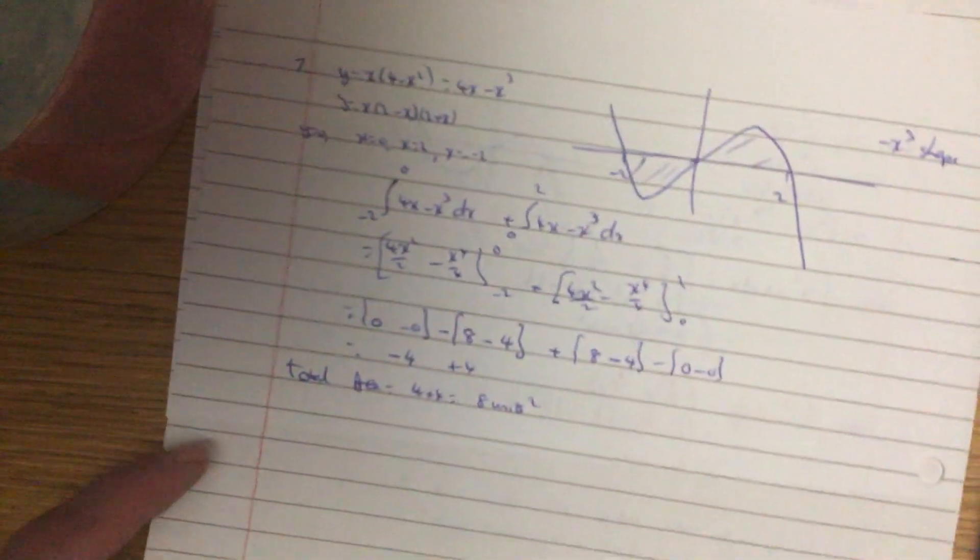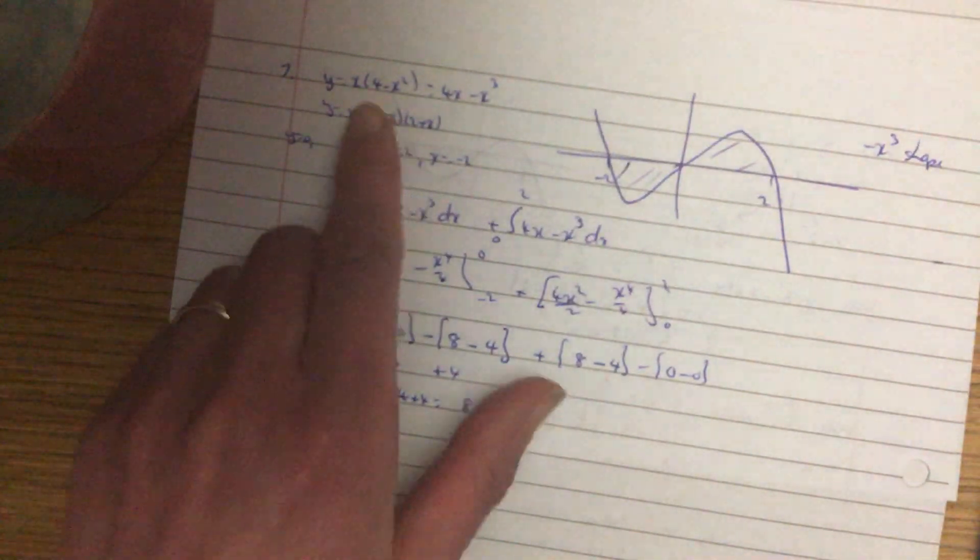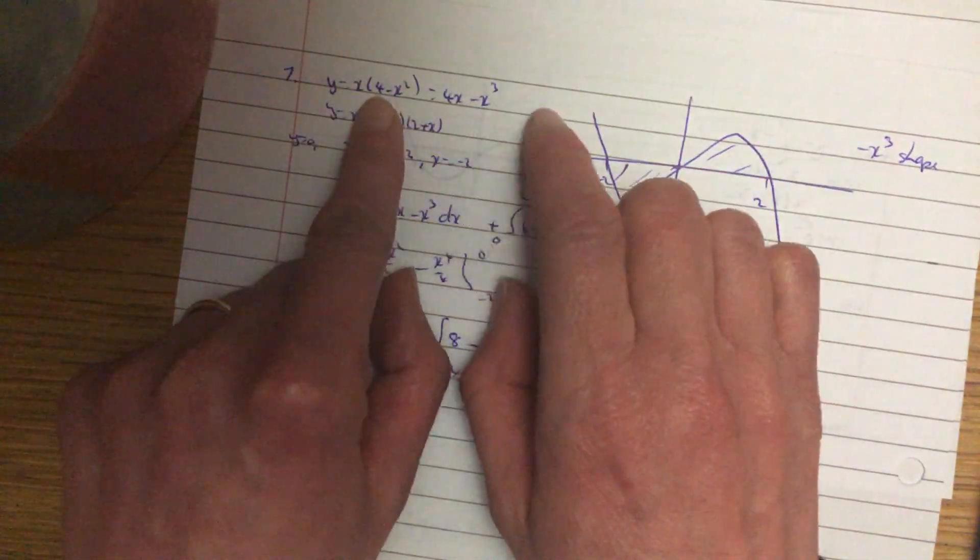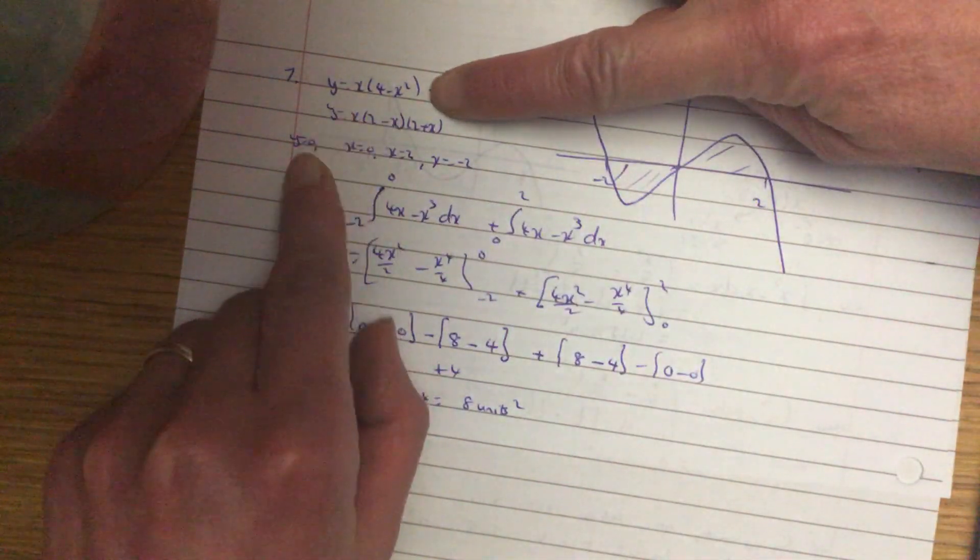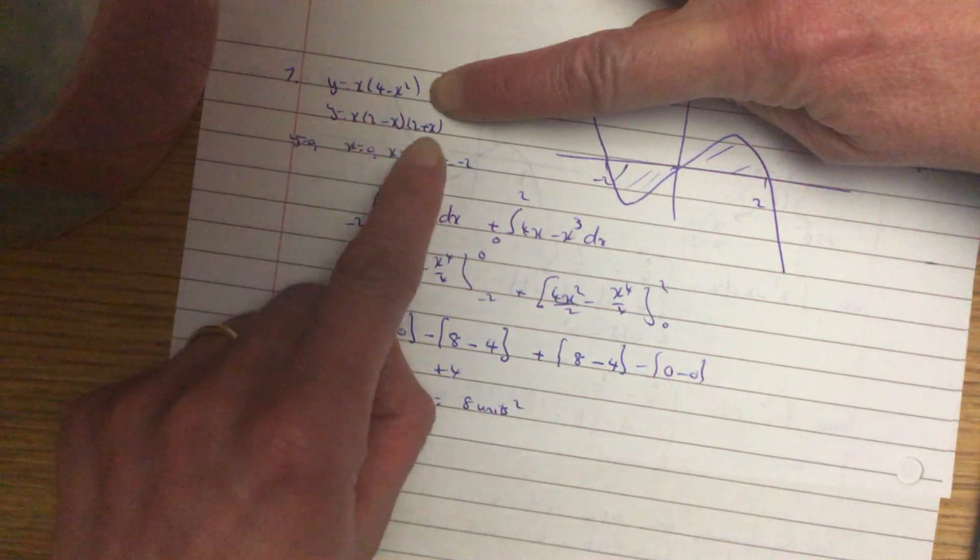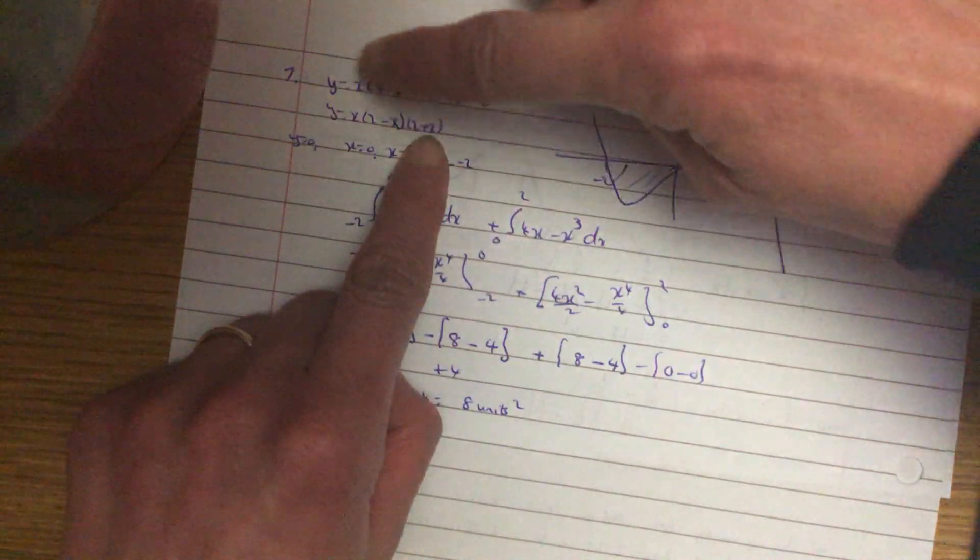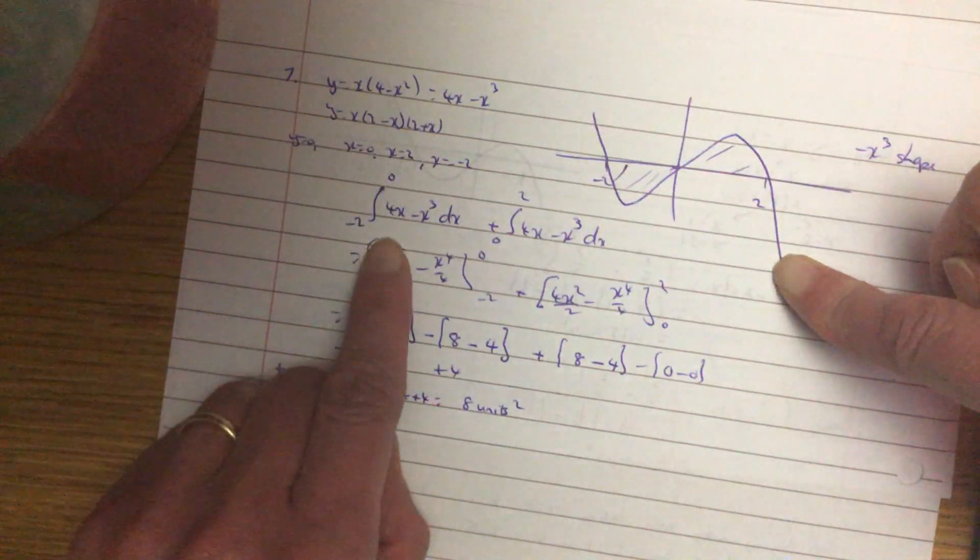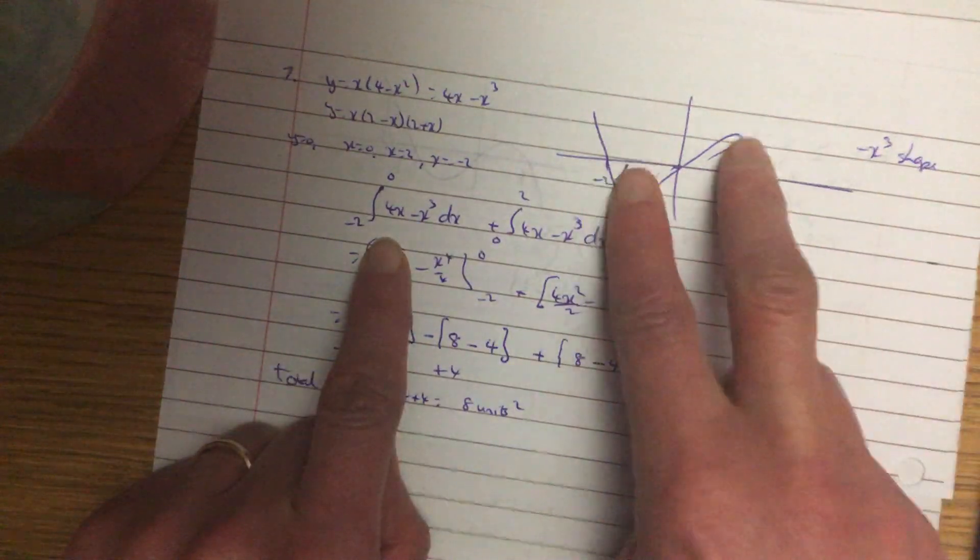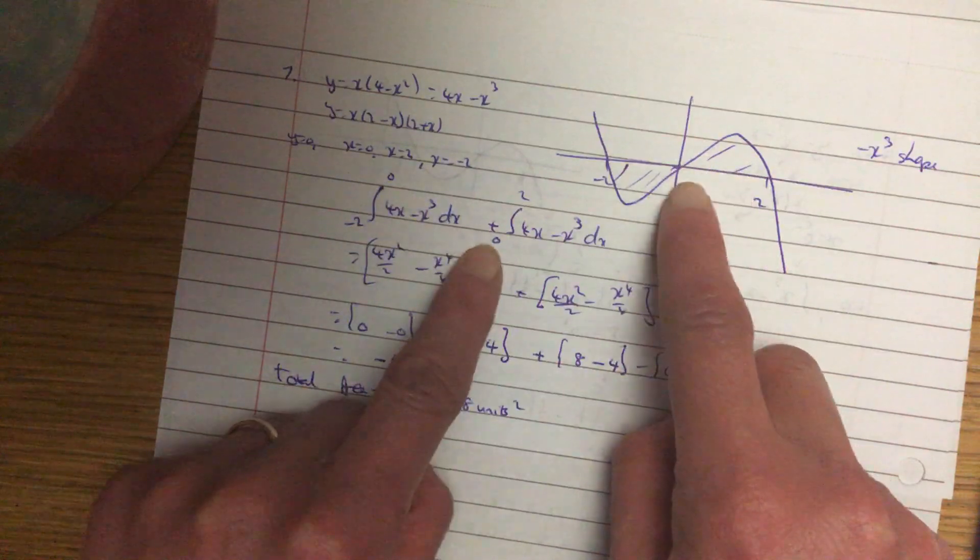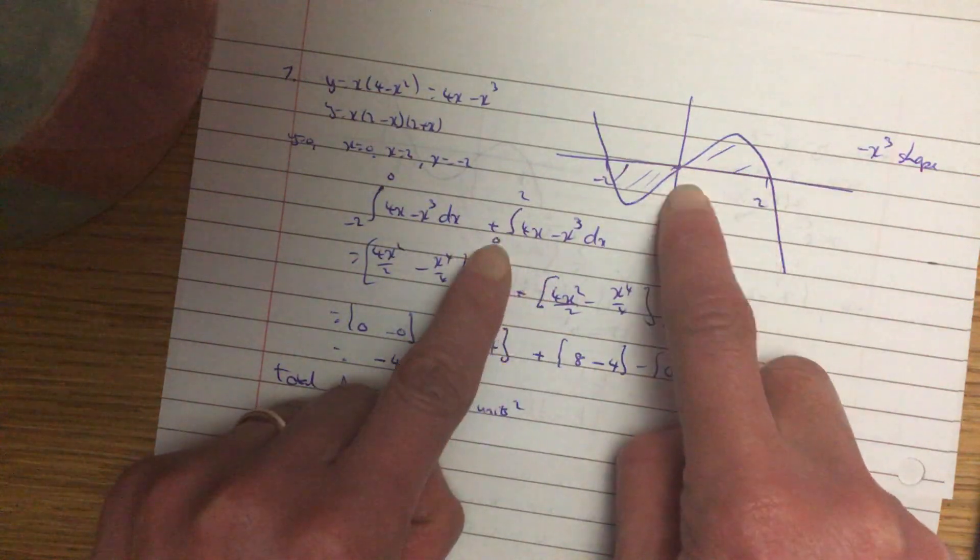And the last question we have got to do. So we have got this curve here. Right. Let's forget this bit. Put y equals 0. So x is 0. That is the difference of two squares. So x is 2 and x is minus 2. It is a negative x cubed. So down and up and down. And you want between the axis. So it is these two bits here. So minus 2 to 0. You do it that once. Then do it 0 to 2. 0 to 2.